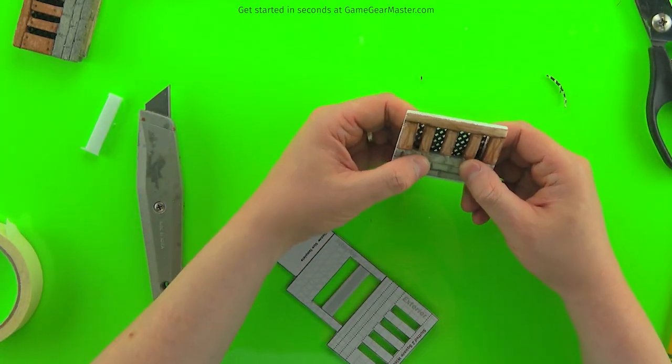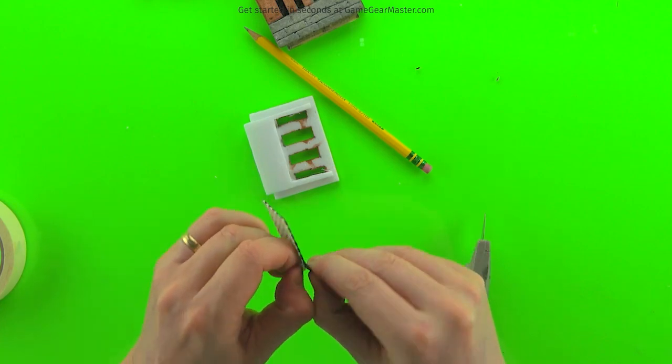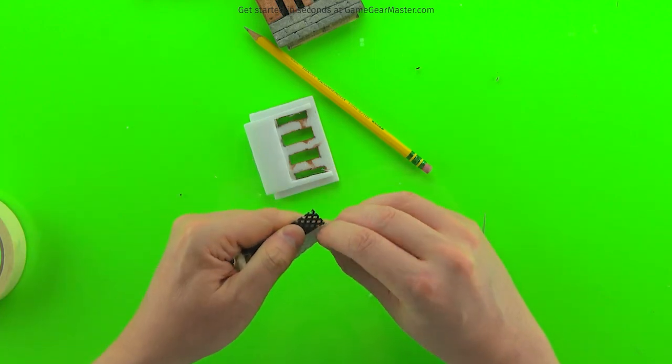There we go, that looks pretty good. And then last but not least, make sure to peel off that masking tape. It's going to be very hard to do that after you put the wall together.